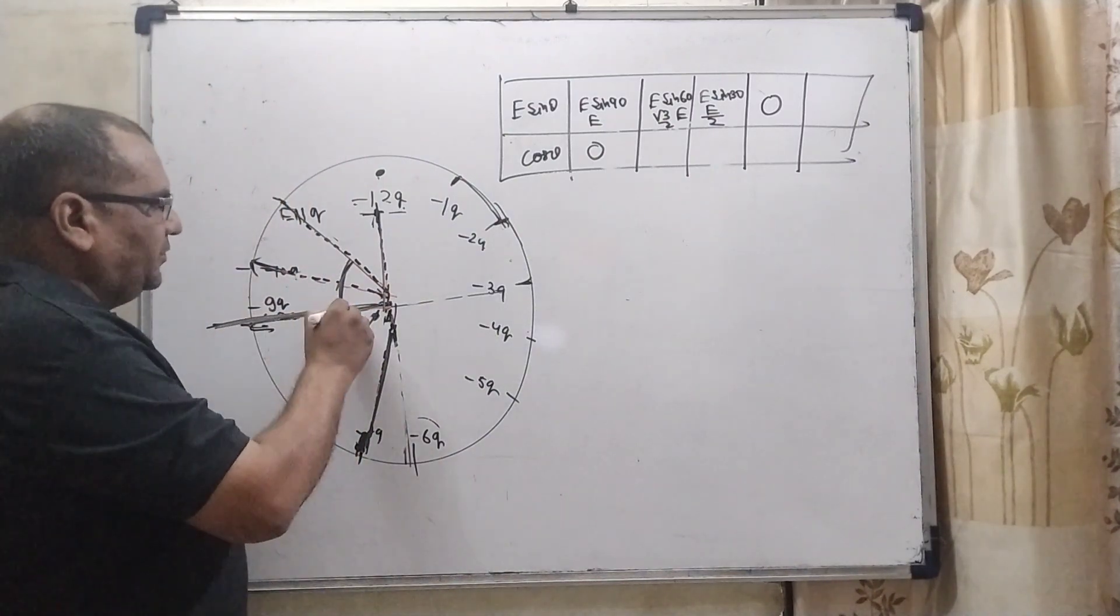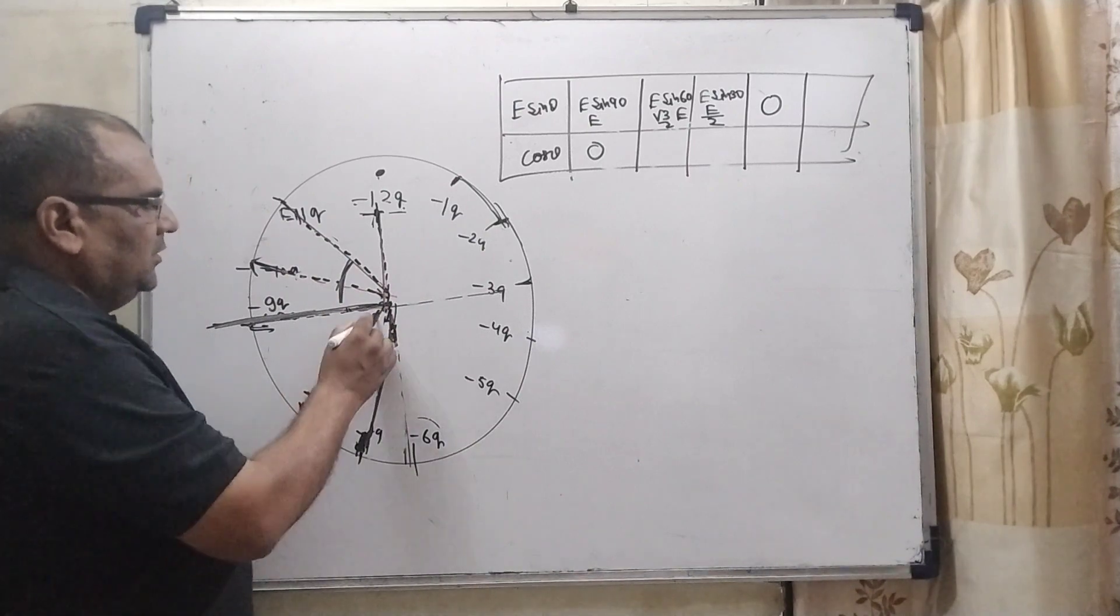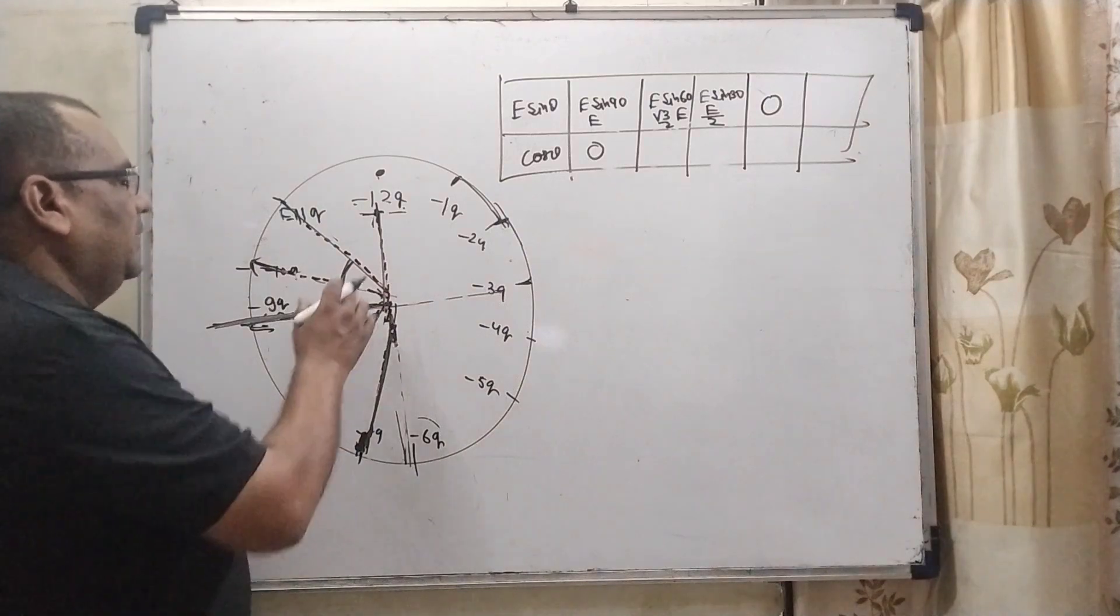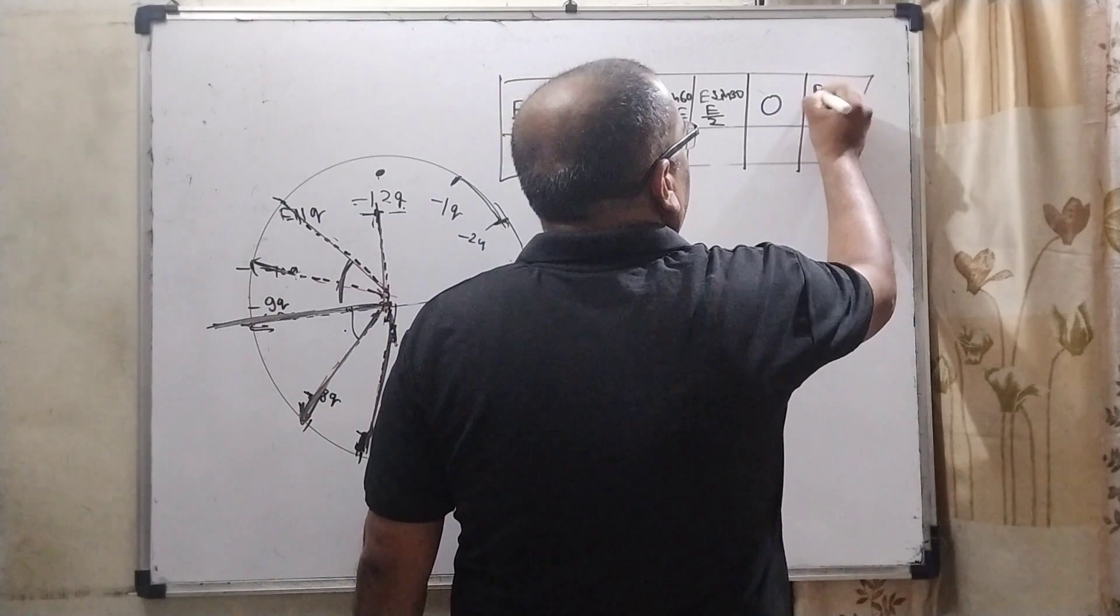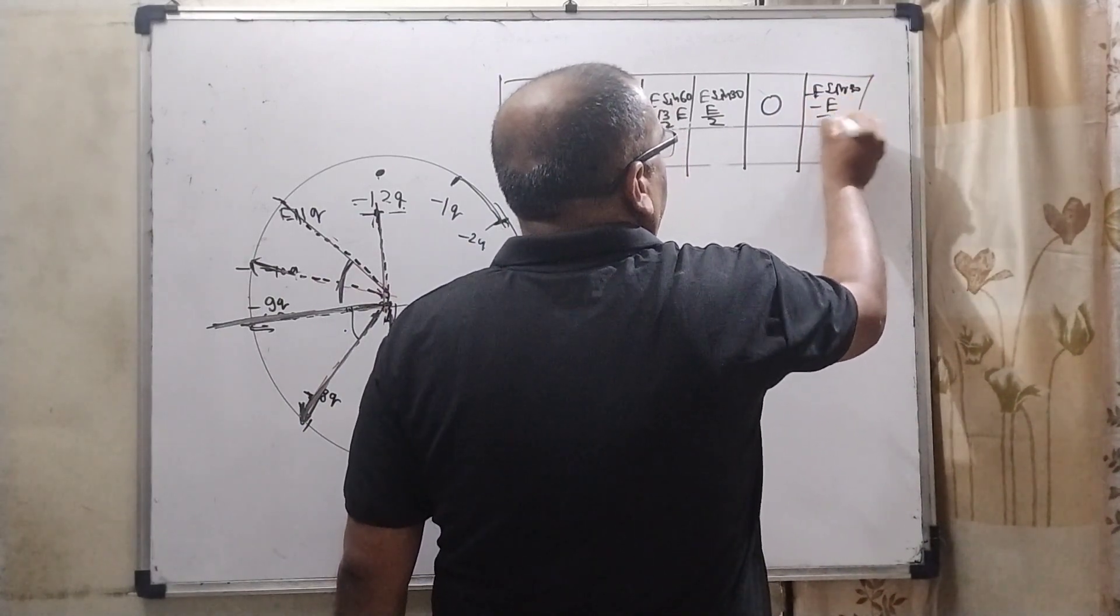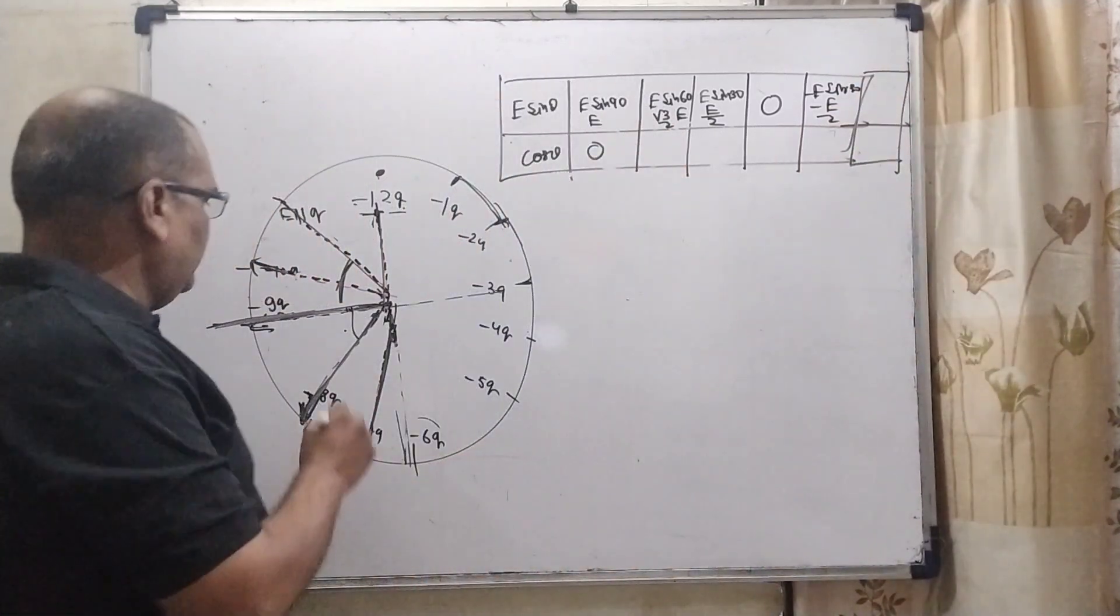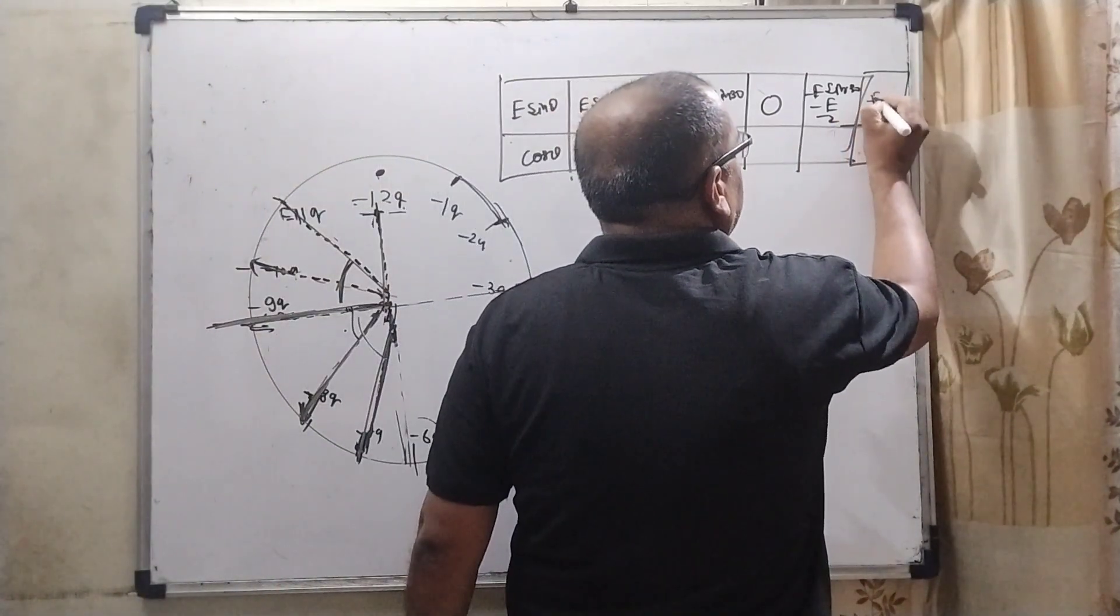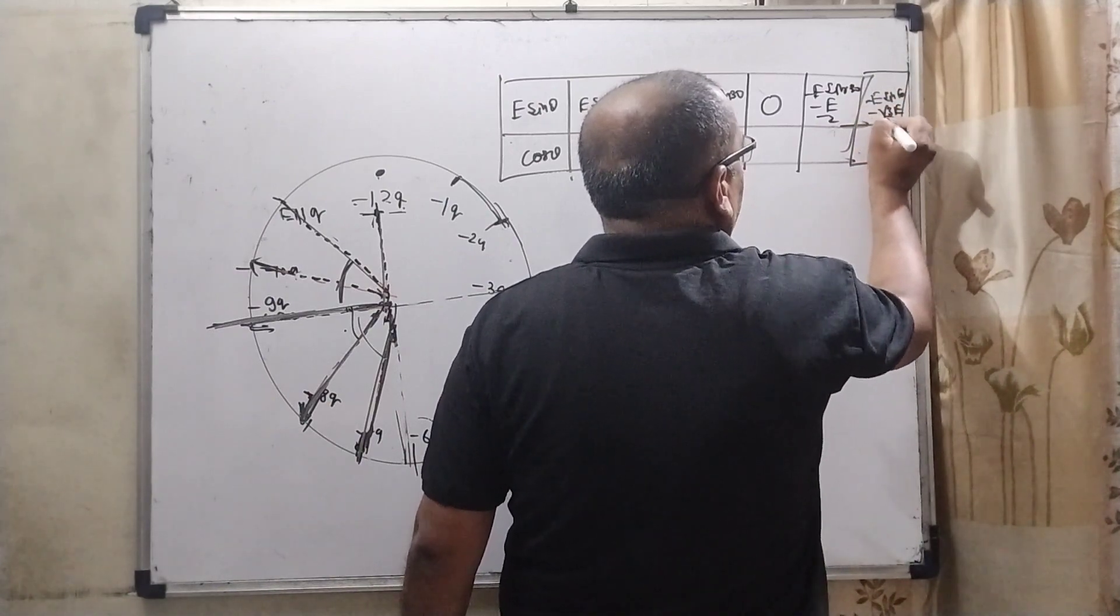Now reaches to the third quadrant or we can say this quadrant. This value is opposite of this. So here electric field is negative. And what is the value? That is 30. So again, E sine 30 but negative, so minus E by 2. And here last one, this is 60. Minus E sine 60, E sine 60 means minus root 3 E by 2.